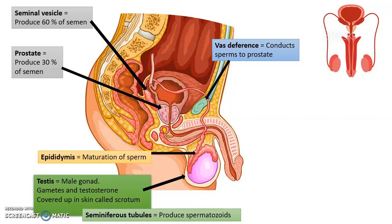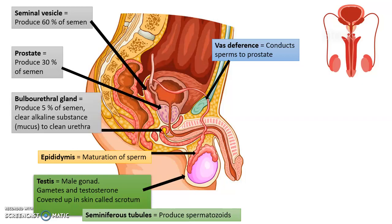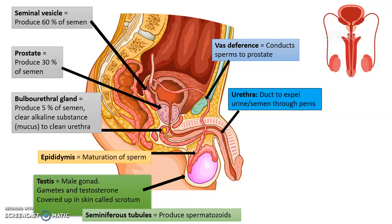The third gland that contributes to semen is the bulbourethral gland, which forms about 5% of the liquid. It has a special function of producing a clear alkaline mucus that clears the urethra to allow sperm to exit the male body through a clean tube, and also to reduce the pH of the vagina. The urethra expels both semen and urine, but not at the same time — urine is expelled in the excretion process and semen is released by ejaculation; these are two different processes.